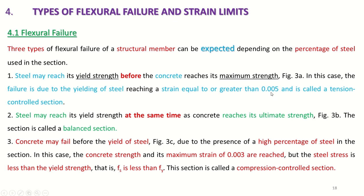The strain in steel is 0.005 and this is called a tension control section. The second type is steel reaching yield strength at the same time as concrete reaches its ultimate strength. This is called a balanced section because both materials are reaching their failure simultaneously. The third type is concrete failing before the yield of steel — opposite to the first — because here the steel percentage is high and concrete fails first before steel yields.